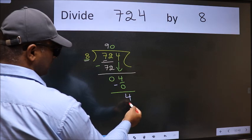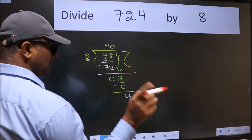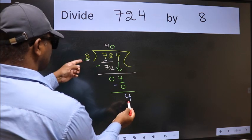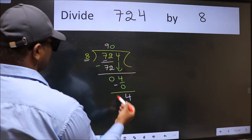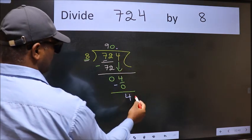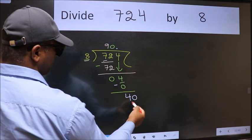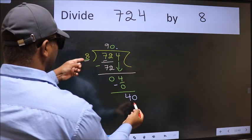Over here, we did not bring any number down. And 4 is smaller than 8, so now we can put dot and take 0. So, 40. When do we get 40 in 8 table?